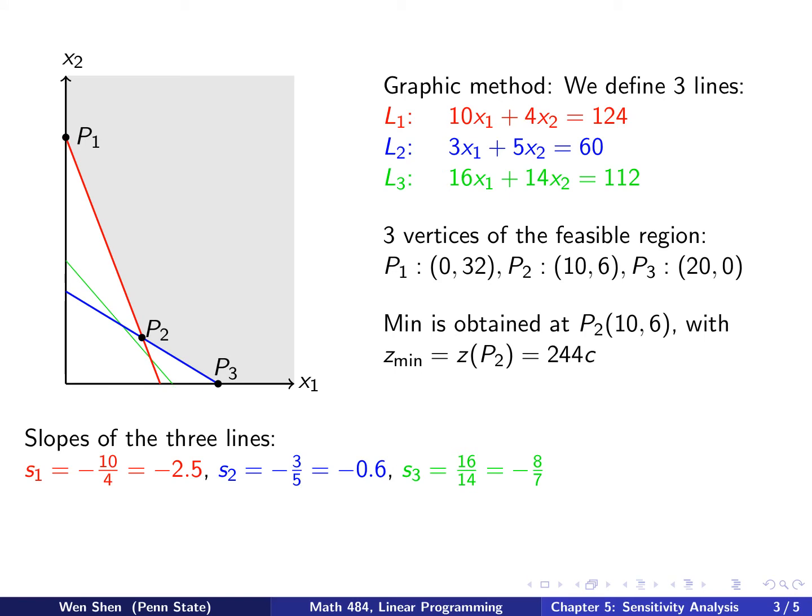Let's take a look at the slope of these three lines. For the red line, what is the slope? It's exactly the ratio of the two coefficients, taking with a negative sign, because we see that they're all going down. So it's negative 10 over 4, which is negative 5 over 2, which is negative 2.5. For the blue line, the ratio is negative 3 over 5, which is negative 0.6. And for the green one, L3, we call this S3, is negative 16 over 14, negative 8 over 7. So what are the relations between the three slopes?